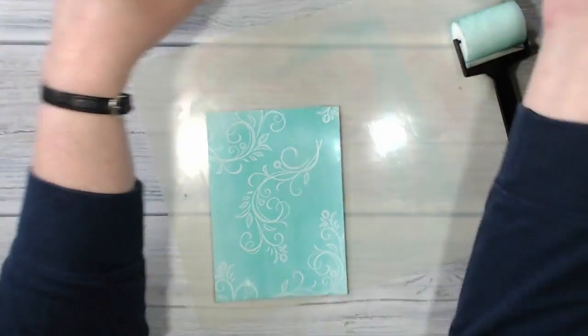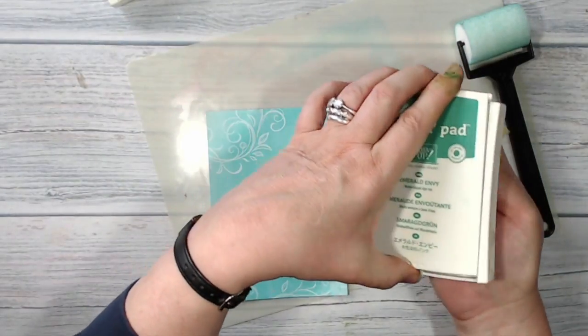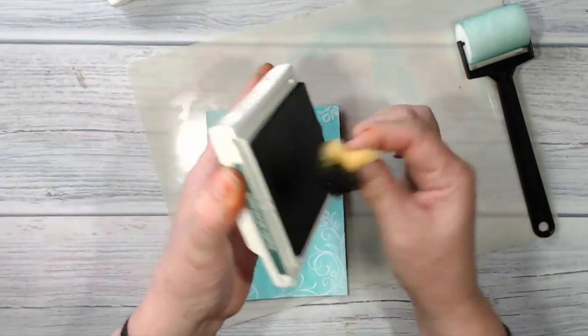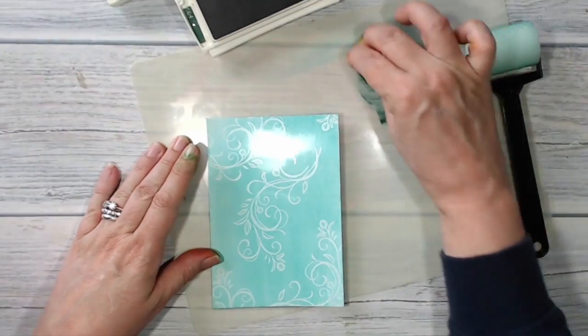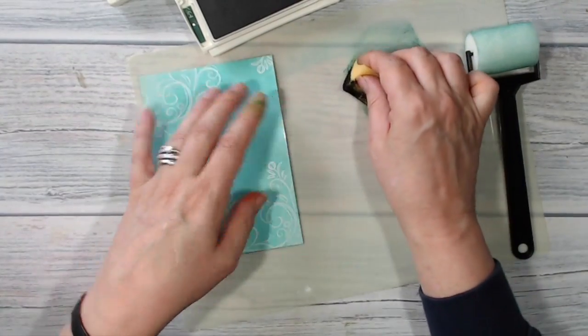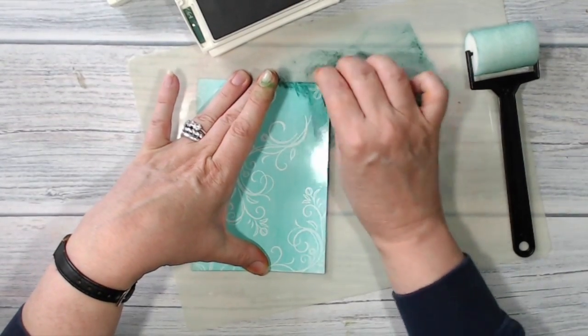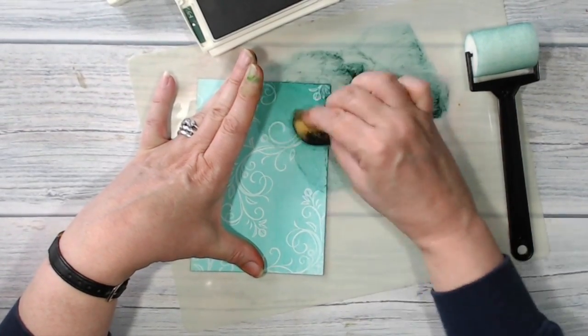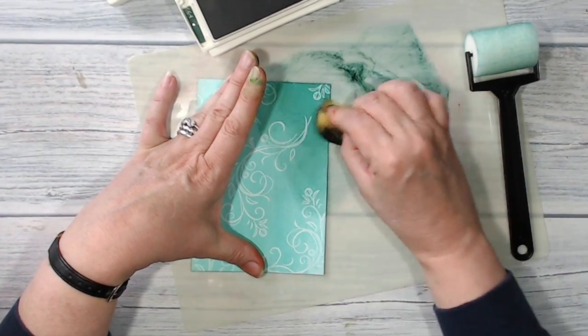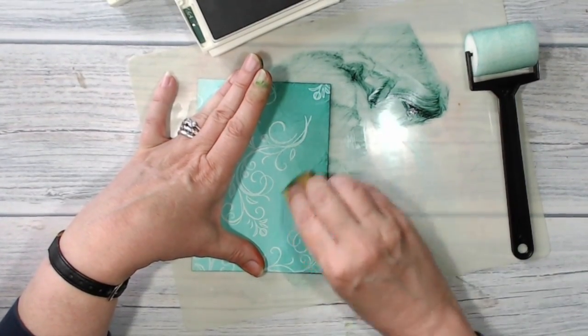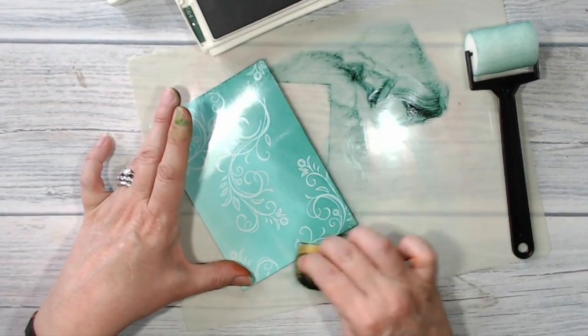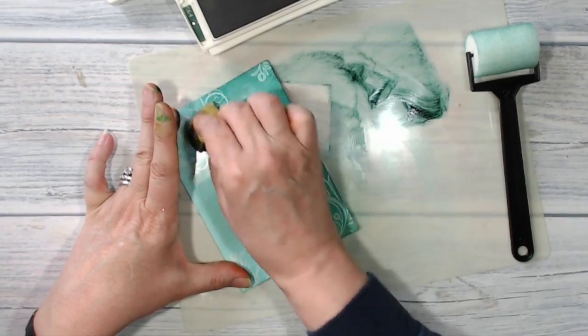And I'm going to bring in a bit of tranquil tide I think around the edges. I'm just using a sponge dauber, just coming just around the edges and really work it out.